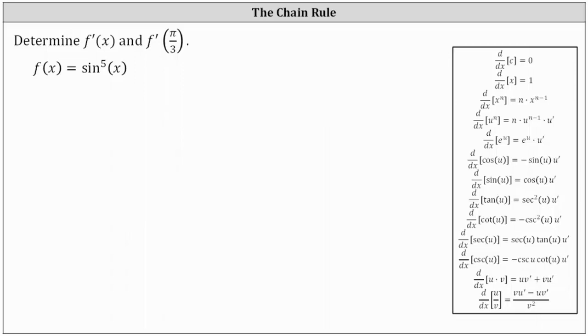Determine f prime of x and f prime of pi divided by three, given f of x equals sine to the fifth x. So the first thing we should do to make this easier to differentiate is to rewrite sine to the fifth x as the fifth power of sine x.